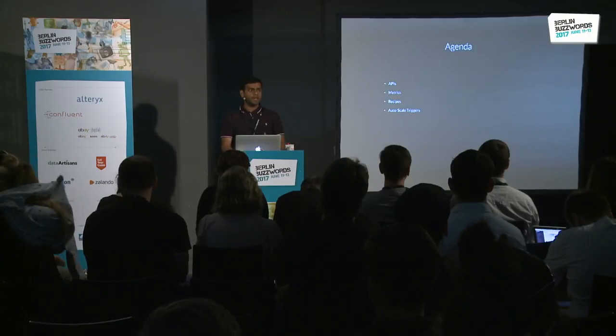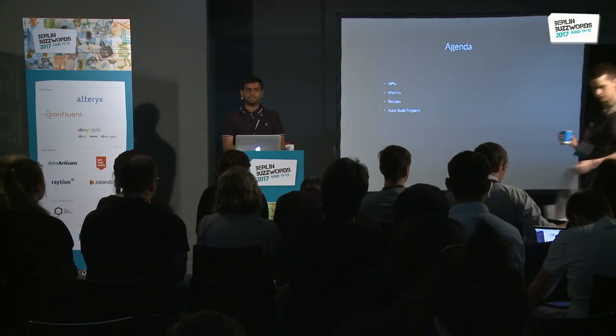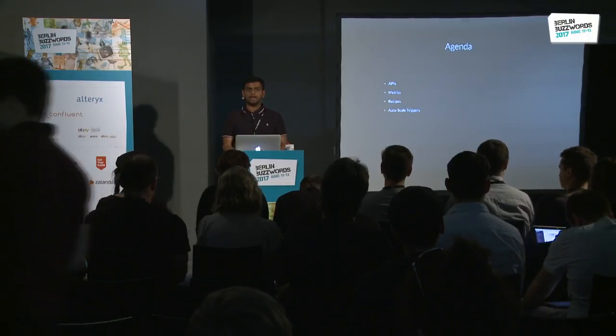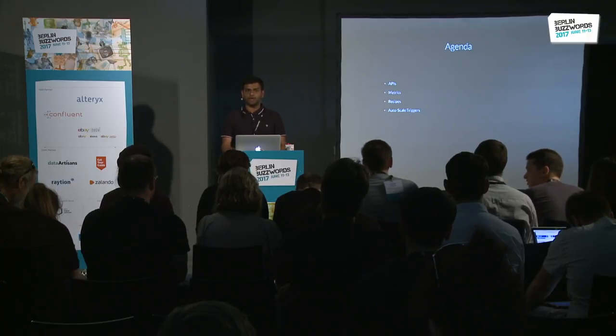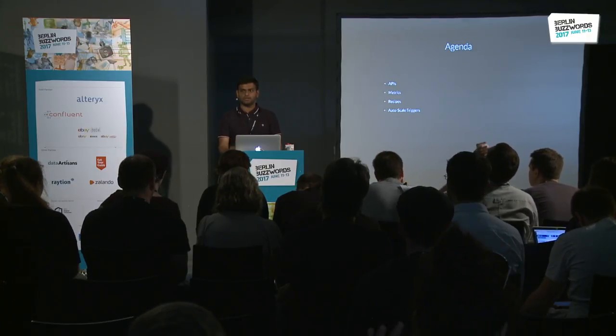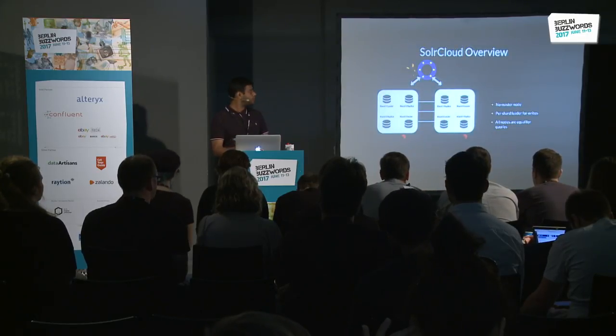Back in Solr 4, we built SolrCloud, which added distributed capabilities into Solr, and how we added APIs. With APIs, we needed more things like metrics to get more insights into your system. Based on that, you could stitch up some common recipes to make sure that your cluster is always healthy, and how Solr can take all these experiences and build going forward to help you manage your cluster in an easier fashion. That was my agenda for the talk.